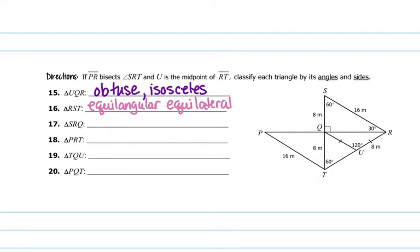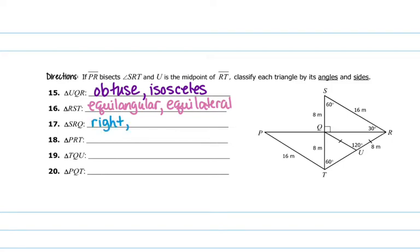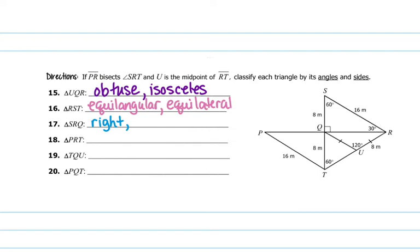And then SRQ, which is this top right triangle up here — so that means we have a right angle for the angle measure. And then we have 8 meters here and 16 meters there. Therefore it must be scalene because none of the sides are congruent.